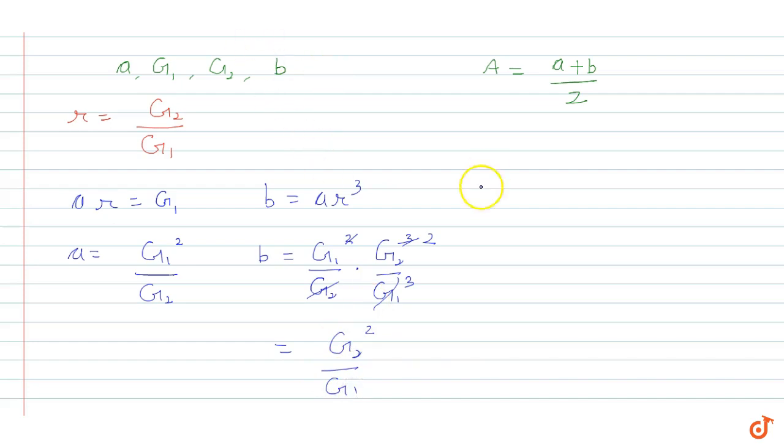If we put the values here and cross multiply, the value is 2 times A, and this is the value of small a, which is g1 square by g2, and what is b?